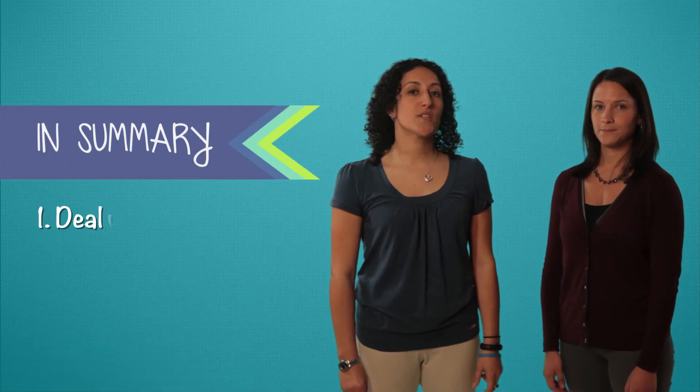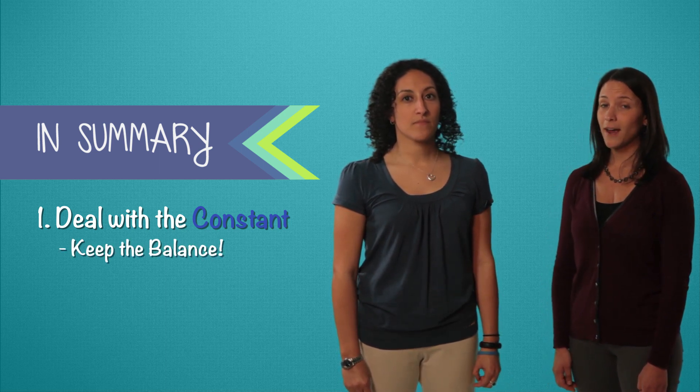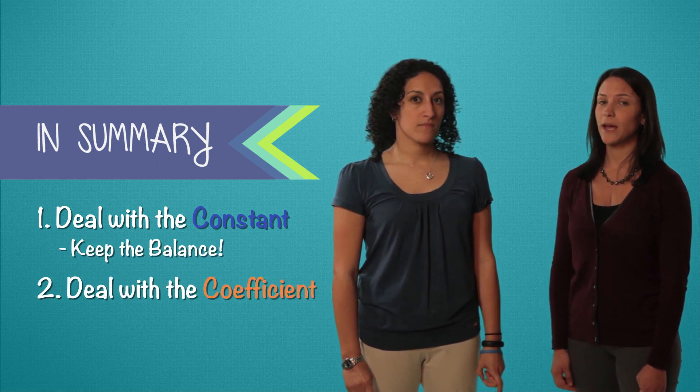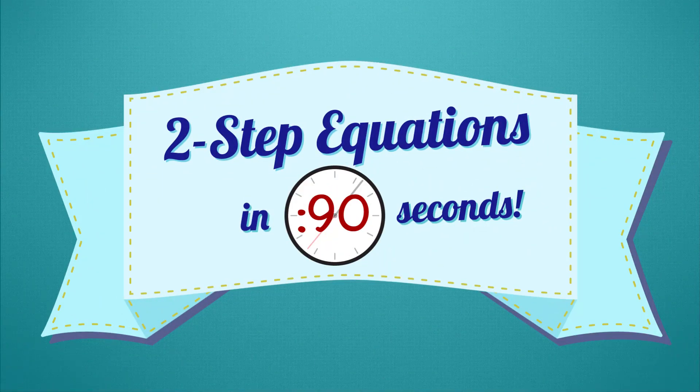In summary, first we deal with the lonely number, the constant. Be sure to keep both sides in balance. Second, deal with the coefficient to get x by itself and keep both sides in balance. And there you have it. Two step equations in 90 seconds.